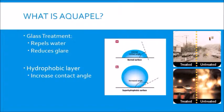The hydrophobicity of Aquapel and other similar treatments increases the contact angle between water and glass. This causes water to bead up and reduces the surface interaction between water and the glass surface, so water forms larger droplets that flow easily on the glass surface.